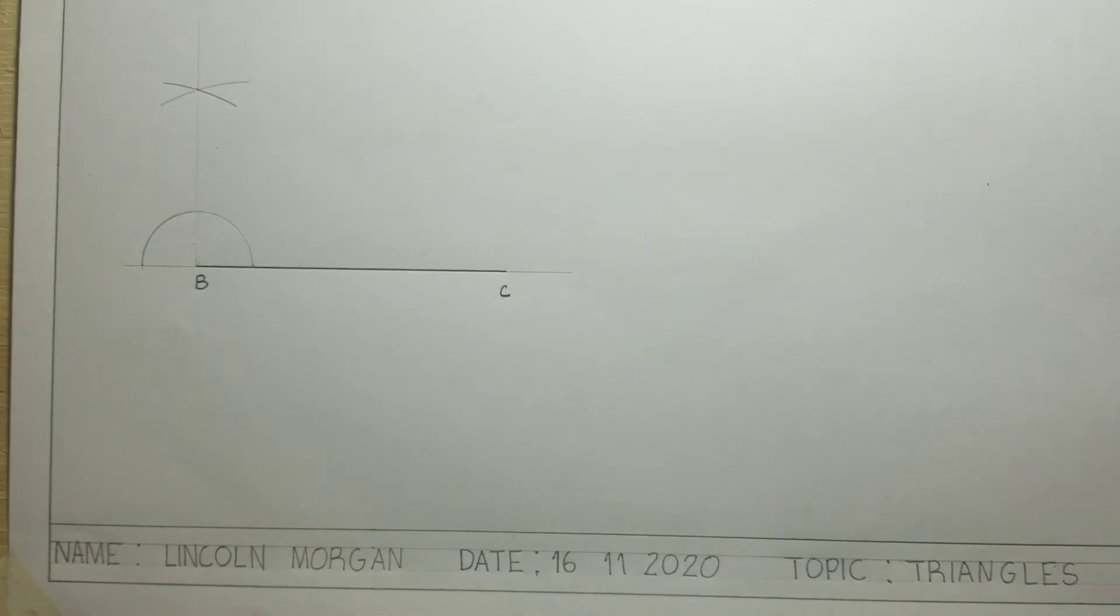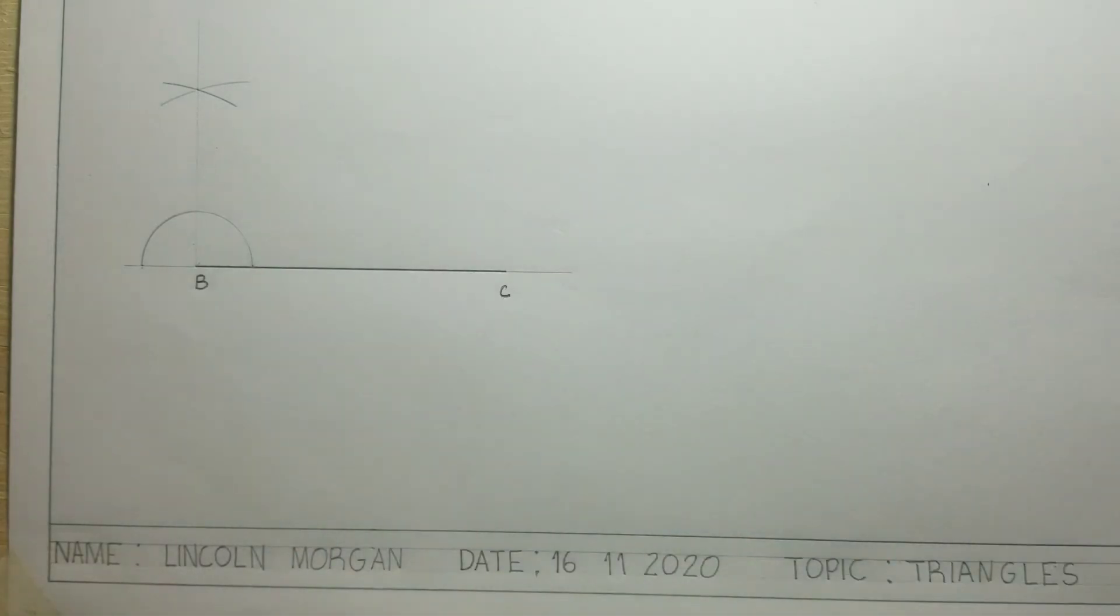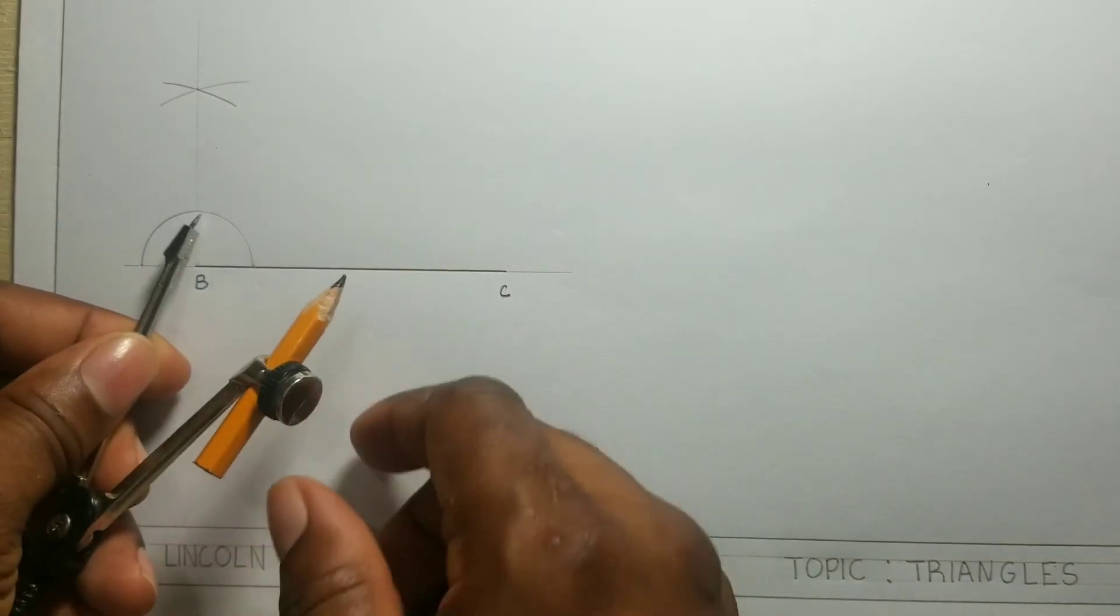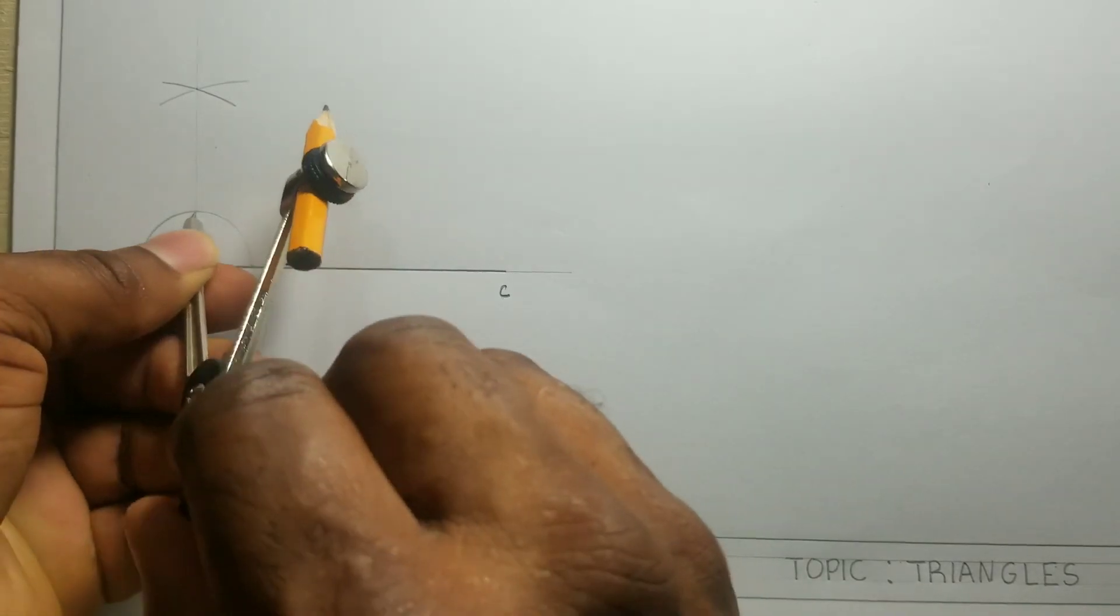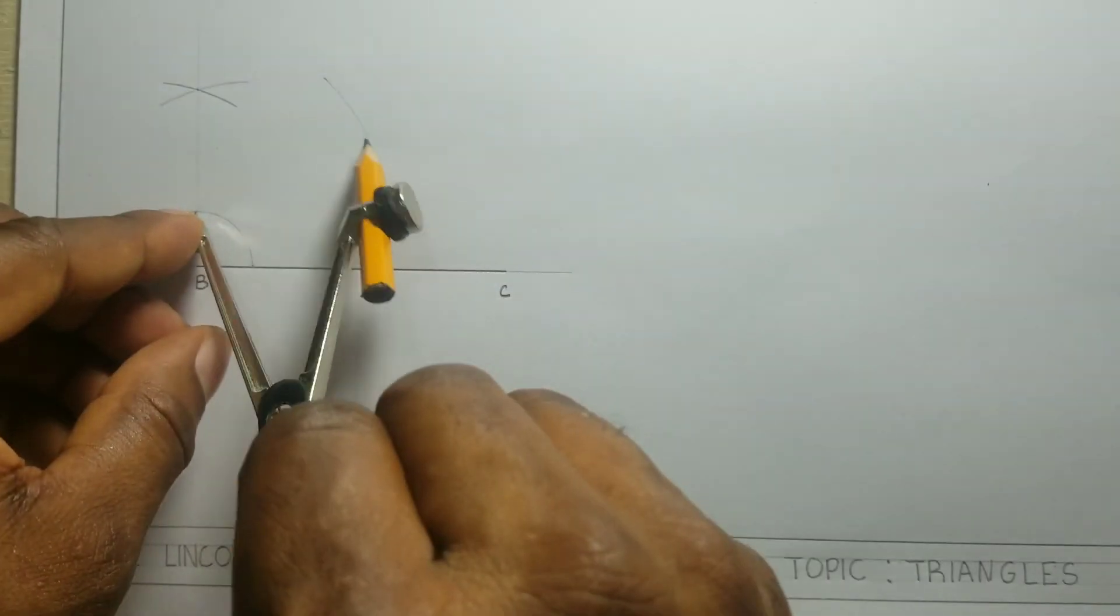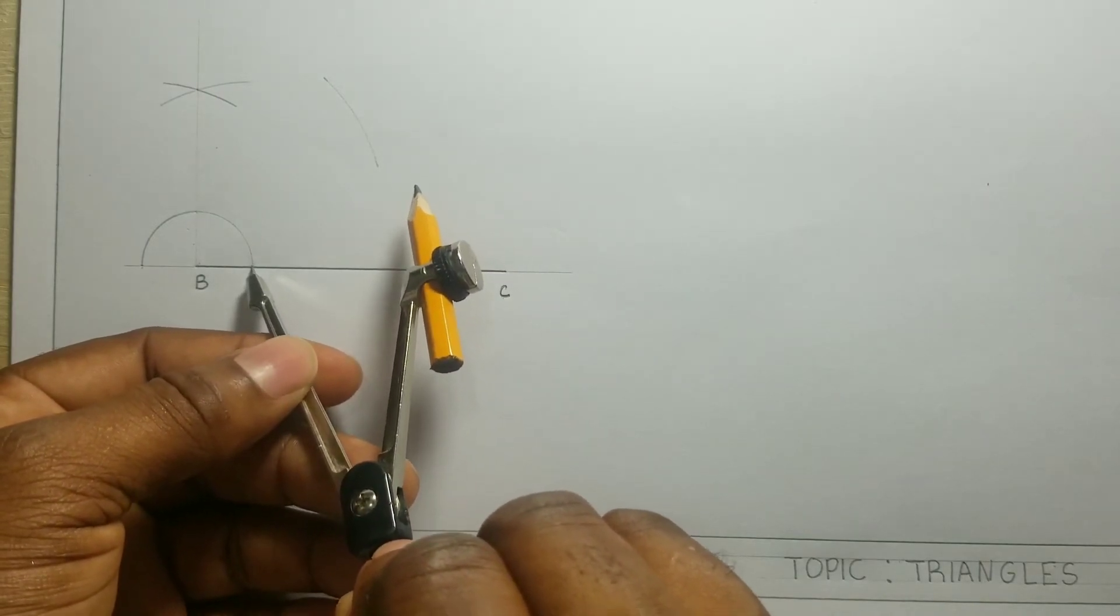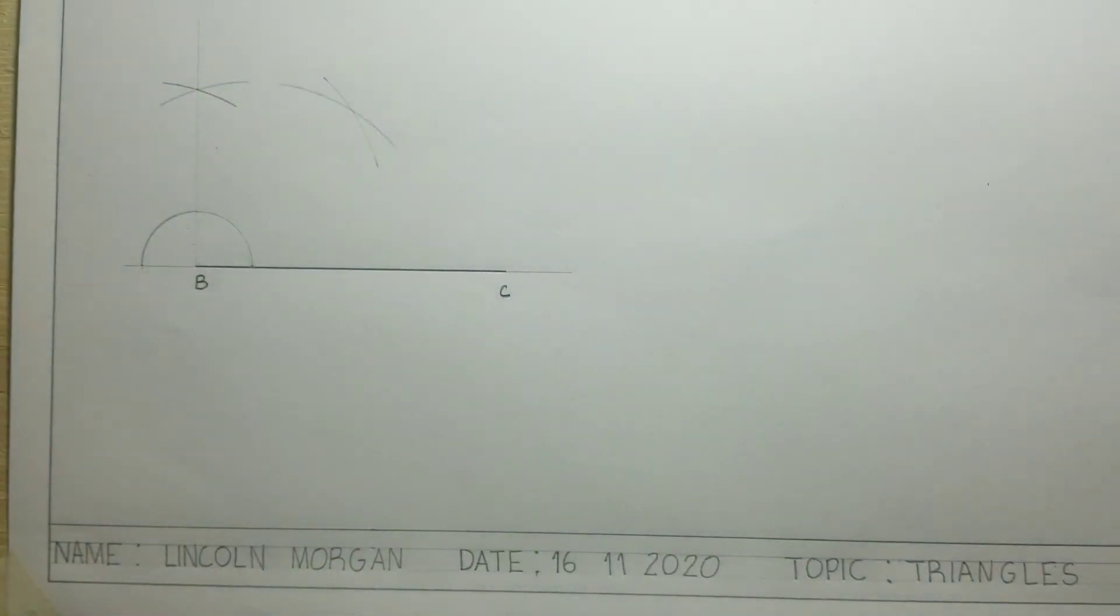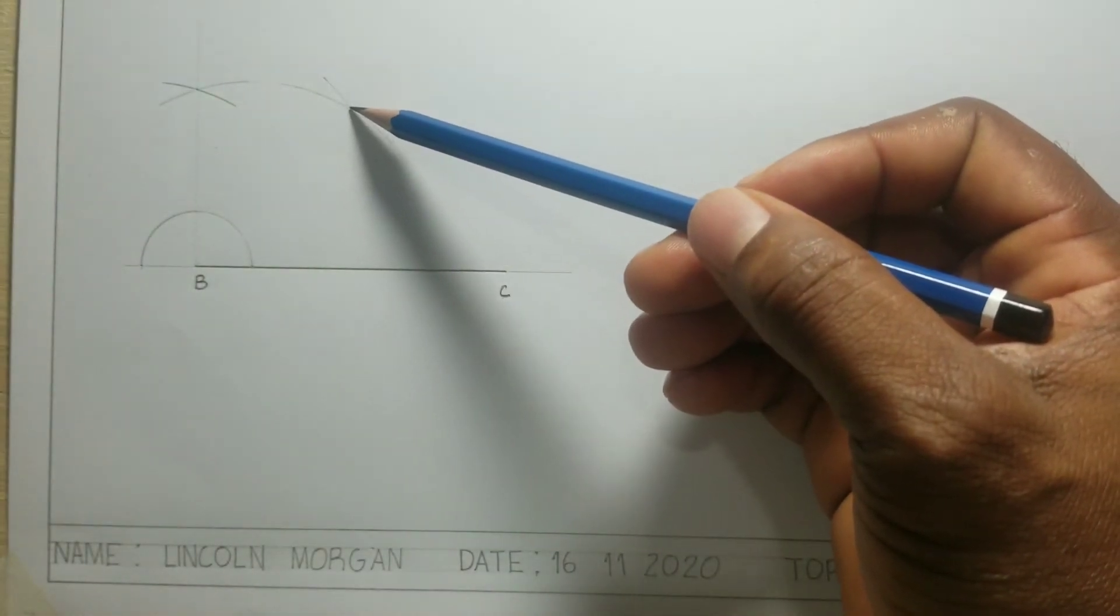We will now bisect this 90 degree angle. We will use these two points as centers for our compass, and we will scribe arcs that will intersect each other. We will now draw a line from the intersection of these two arcs to point B.